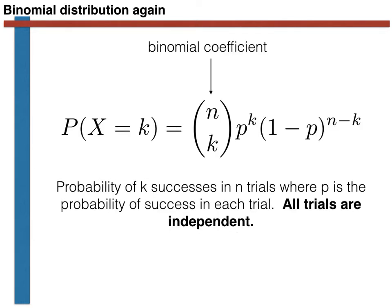We will start from something that by now should be familiar: the binomial random variable. We have seen in previous videos that the binomial random variable measures the probability of obtaining exactly k successes in n identical and independent trials. Furthermore, we should also know by now that the probability mass function for this type of random variable is the expression shown on this slide. To understand how the hypergeometric distribution comes about, we are going to consider a particular way of generating binomial random variables.